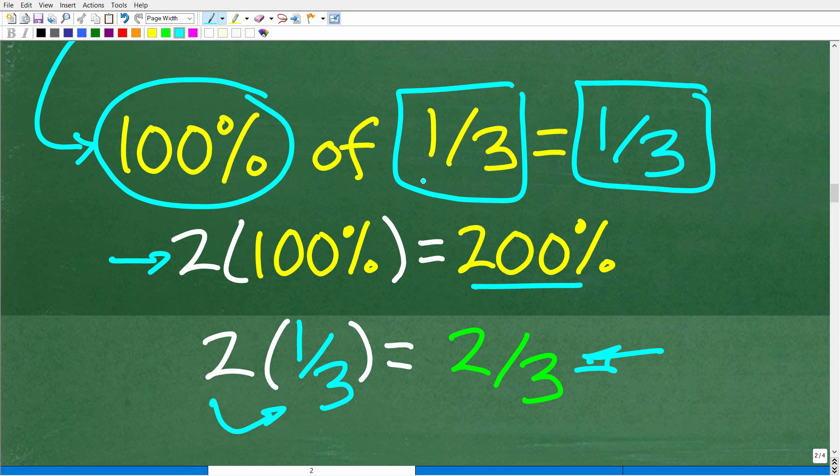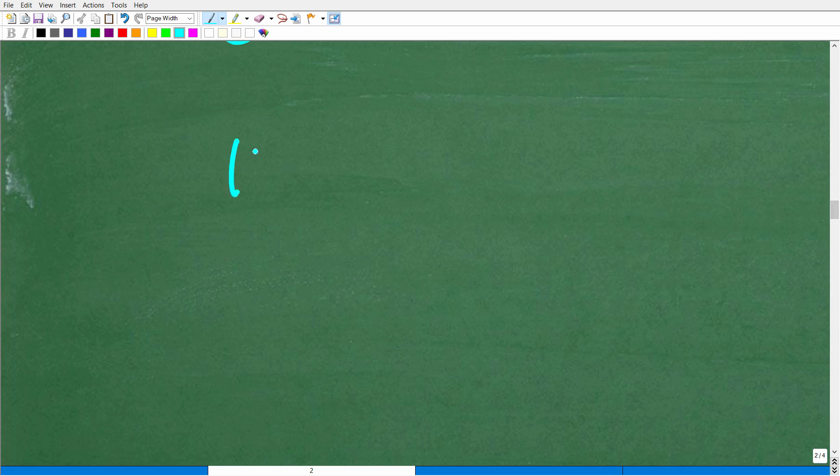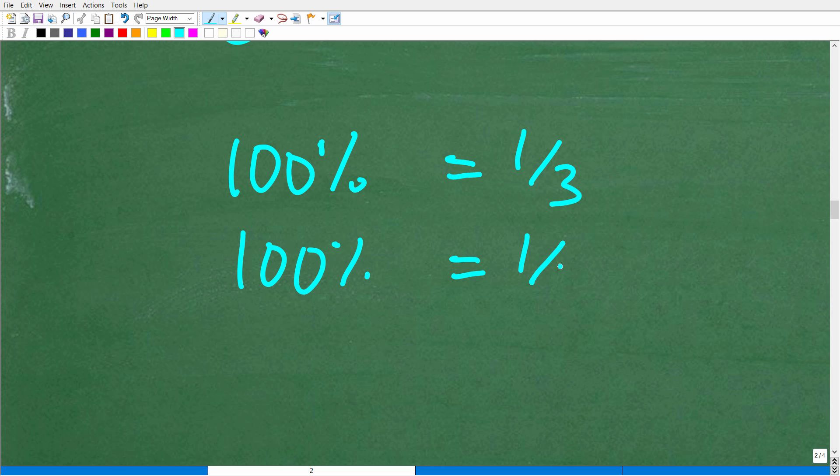Or, if we know 100%, let's kind of look at it this way. 100% is one-third. 100% is one-third. And I want 200%, well, I can just, in my brain, be like, all right, 100% and 100%. That's one-third and one-third. Add these two together. One-third and one-third is two-thirds. So, there's all different sorts of ways you could have come to the conclusion that the answer is two-thirds.